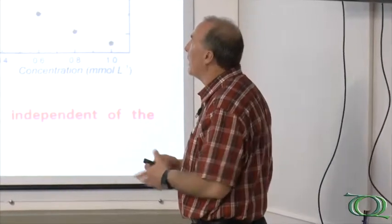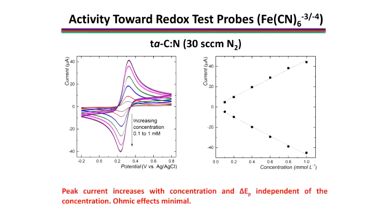If you want to know whether the electrode is analytically useful, you look at how things change with concentration. These are concentrations at one scan rate going from 0.1 millimolar up to 1 millimolar — well-defined voltammograms with a nice linear increase in peak current with concentration. So this is very important to know that your system is analytically useful.